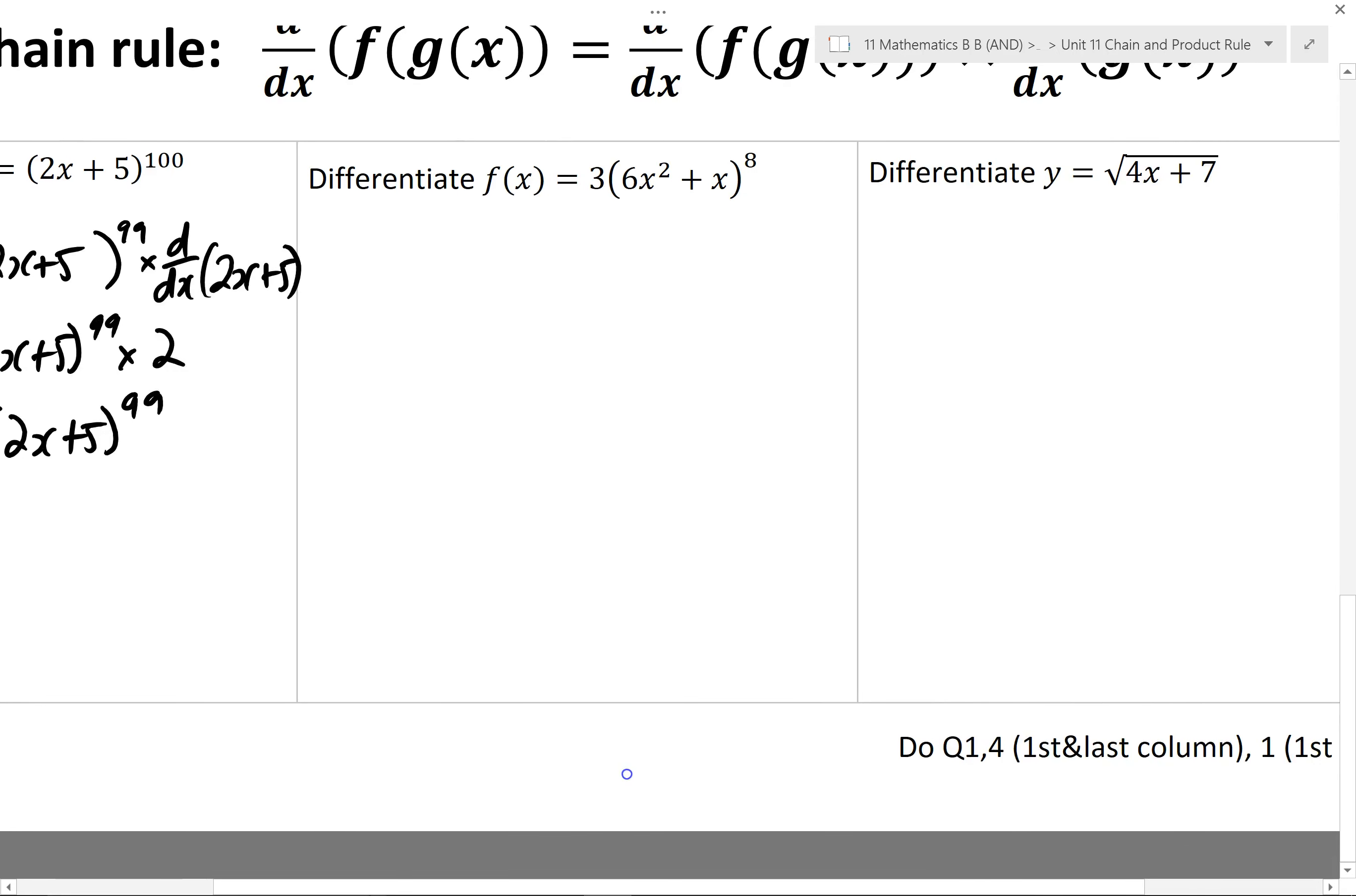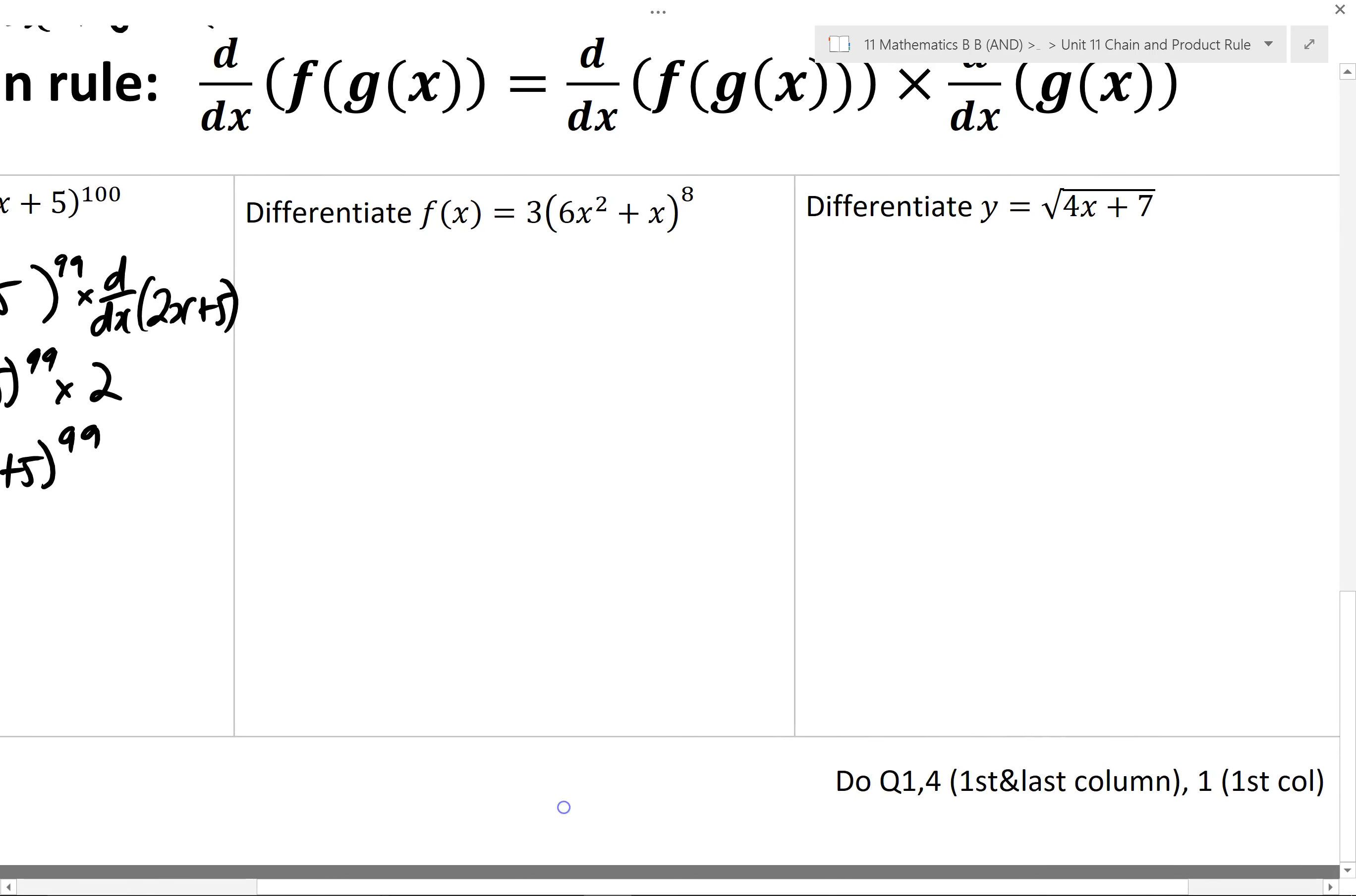So moving on, slightly more complex example, trying to find f dash of x. I'm wondering what's going to happen to this 3 here. Well, my inside function, or the function of the function is this one. So I'm going to pretend that doesn't exist and differentiate it like normal.